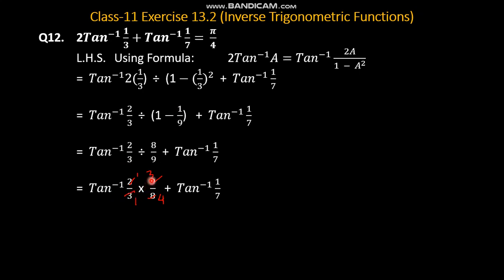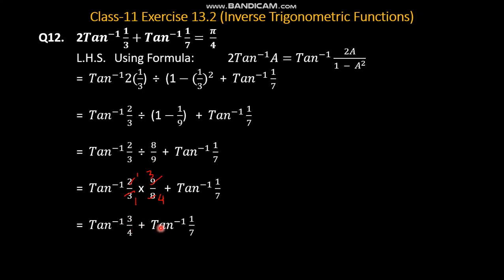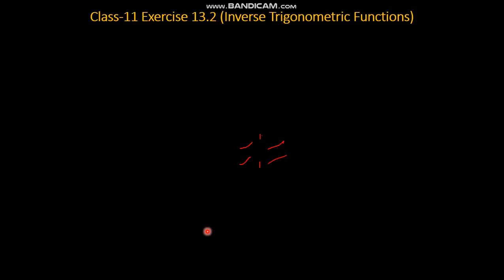Next step में reciprocal ले देते हैं: tan inverse 2 over 3 multiplied by 9 over 8. यहां से cutting करते हैं: 3 और 9 cancel, 2 और 8 cancel। tan inverse 1 over 7 साथ साथ चल रहा है। Reduced होने के बाद आगया tan inverse 3 over 4 plus tan inverse 1 over 7. अब इस पे tan inverse a plus tan inverse b का formula लगा देते हैं और answer pi by 4 में आजेगा।